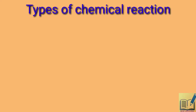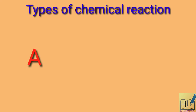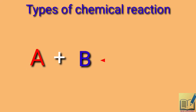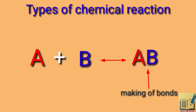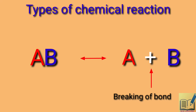We already learned in a previous class, while studying chemical reactions, that atoms of one element do not change into another, nor do atoms disappear from mixtures or appear from elsewhere. They do not lose their identity, nor do they gain any new identity. The atoms remain the same — if there is oxygen, there will be oxygen; if there is carbon, there will be carbon. They are involved in making and breaking of bonds, which causes new substances to form.